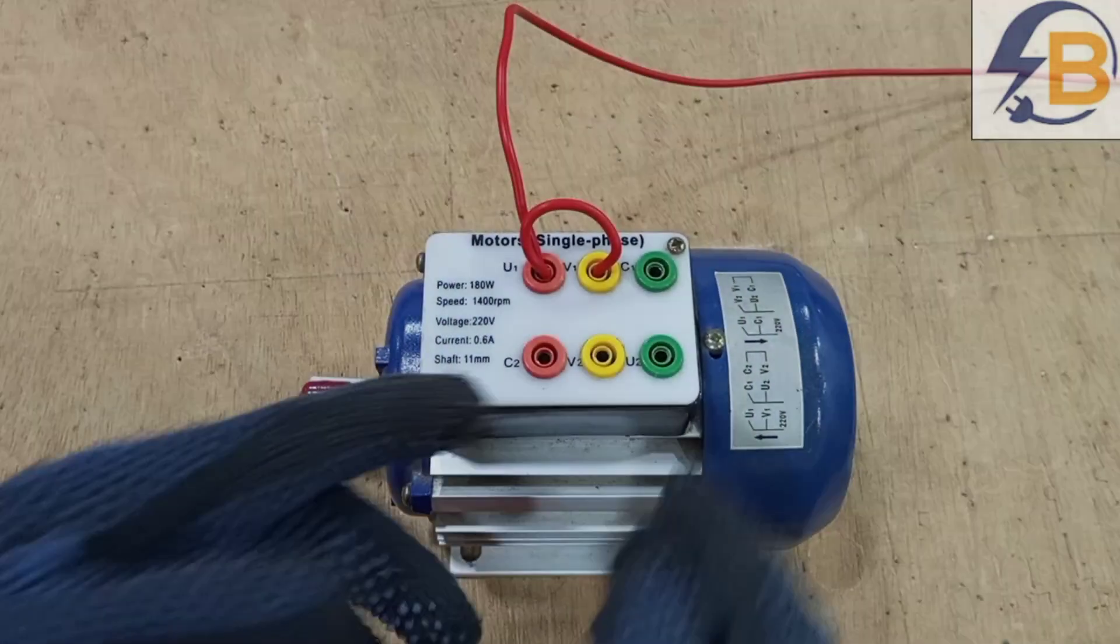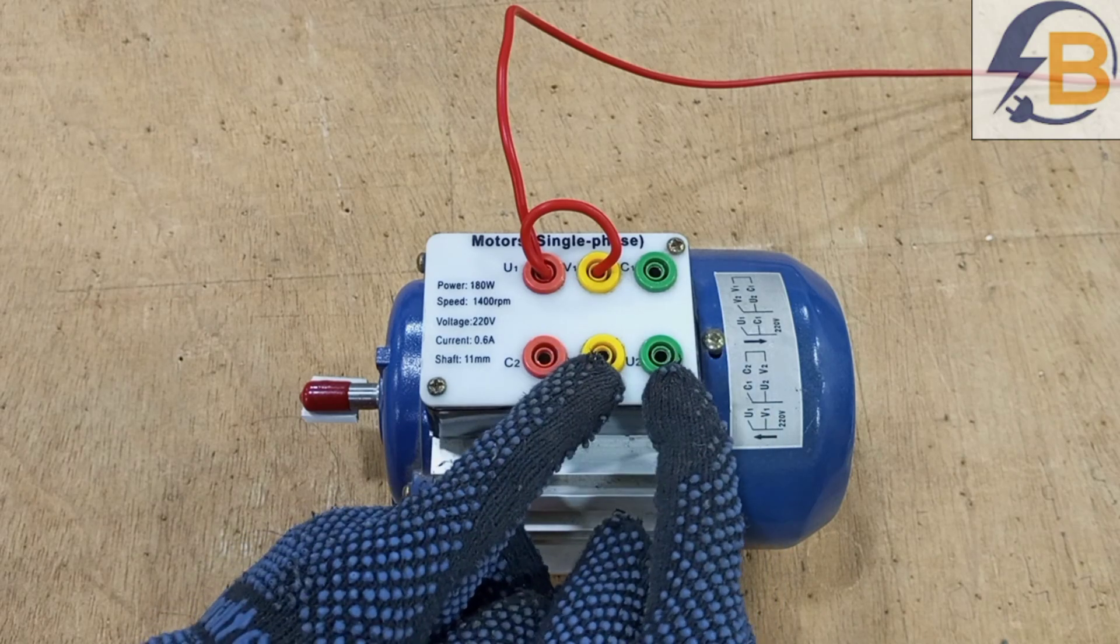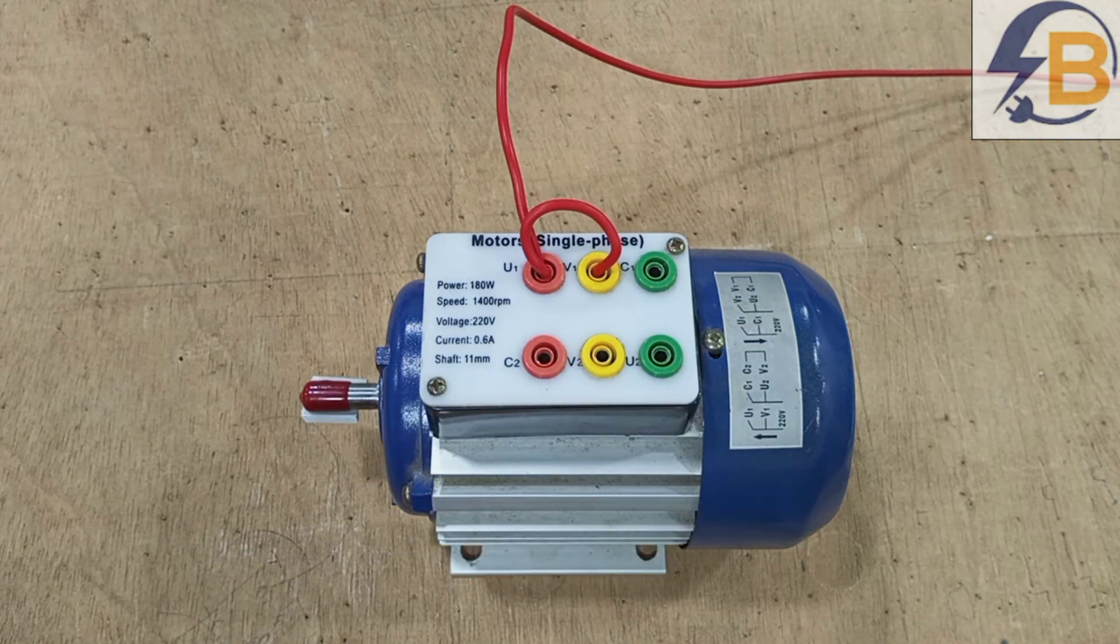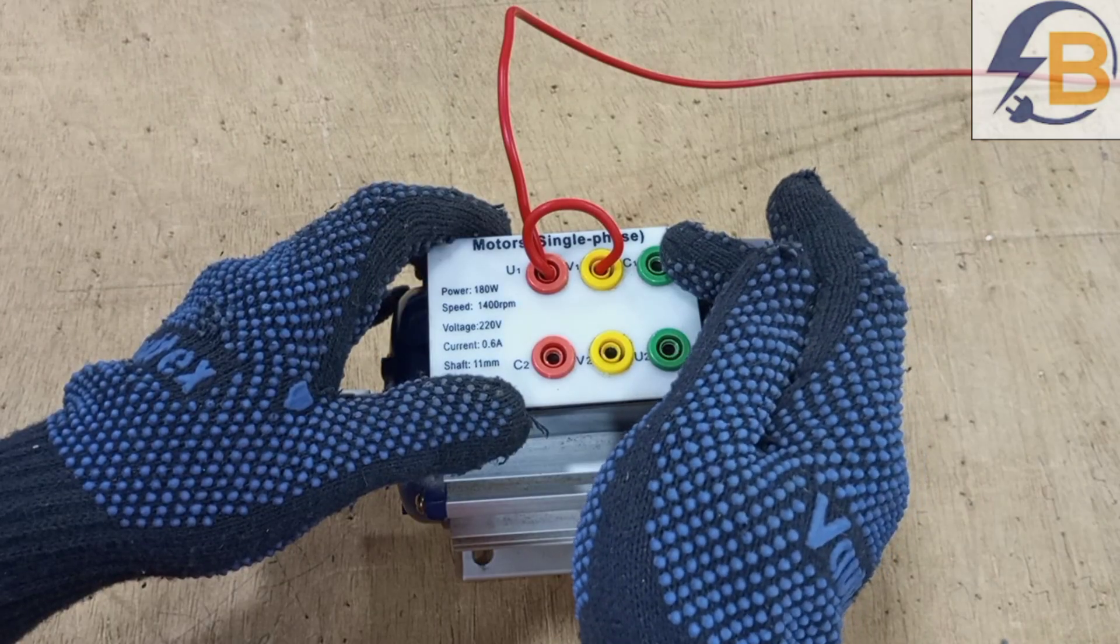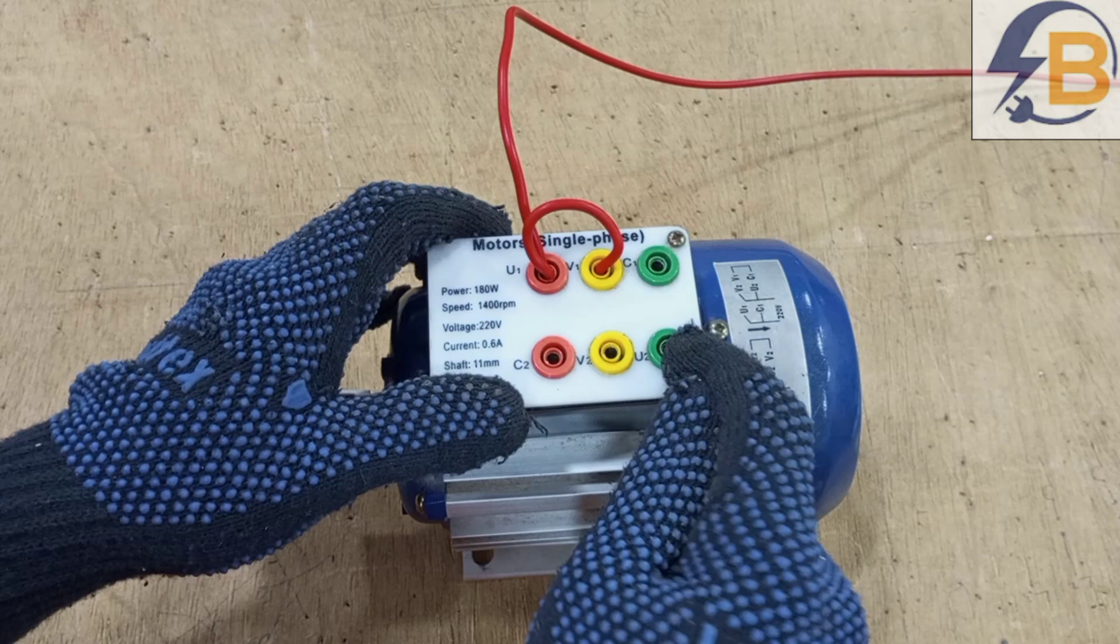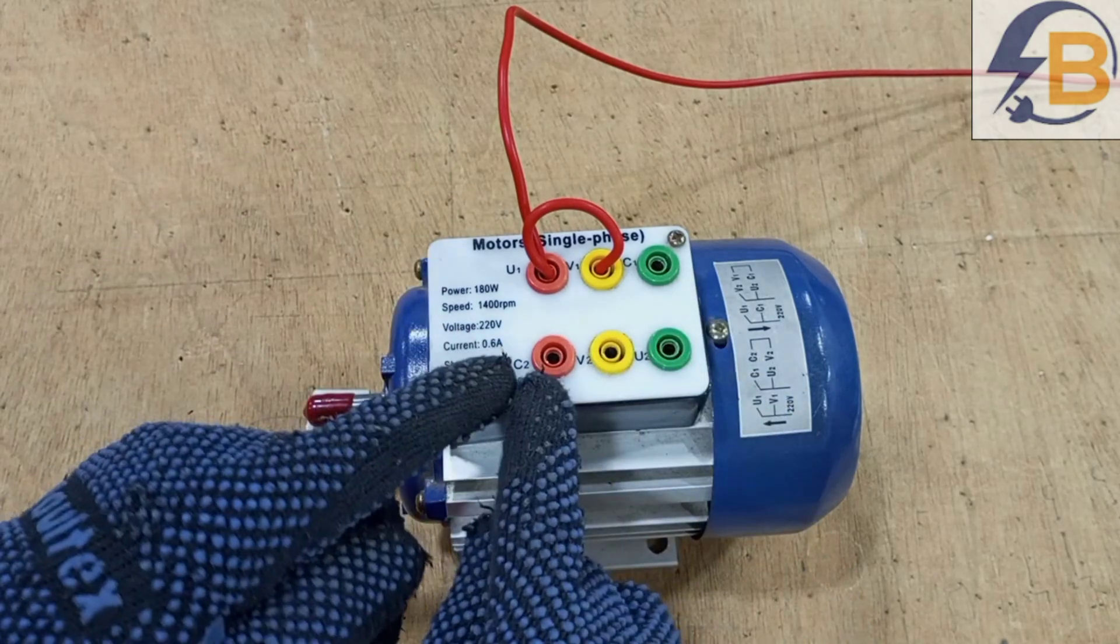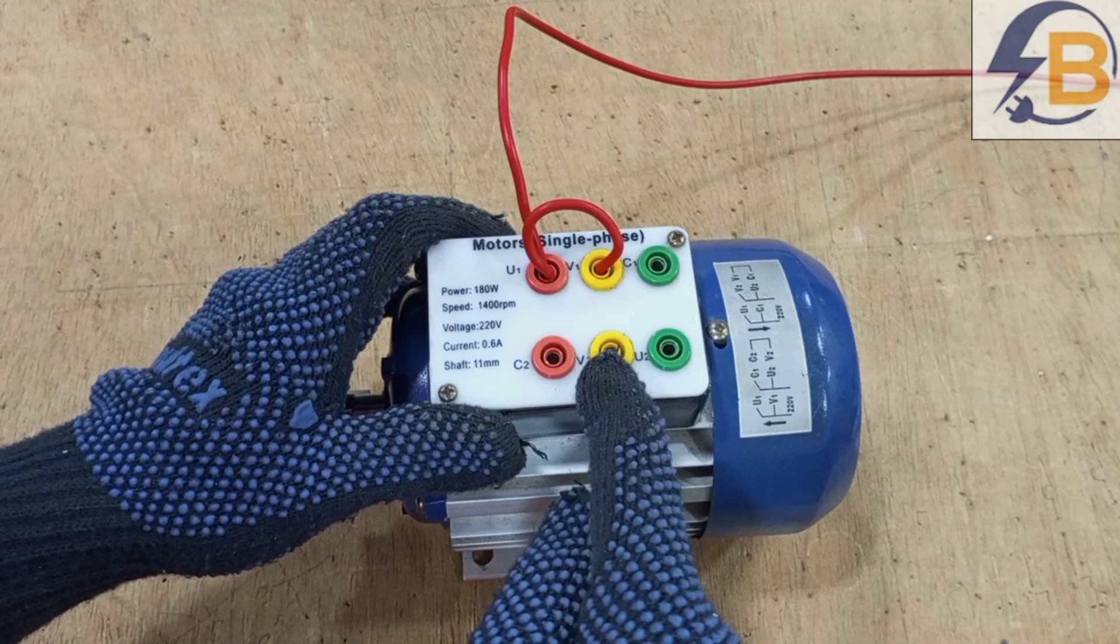So now we are left with the two connections from the capacitor and then the ends of the main and auxiliary winding. So simply this is what we are going to do. One of the capacitor connection will be linked with the end of the main winding and then the other end of the capacitor will be linked with the end of the auxiliary winding.